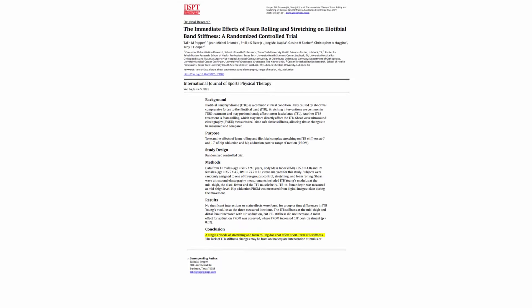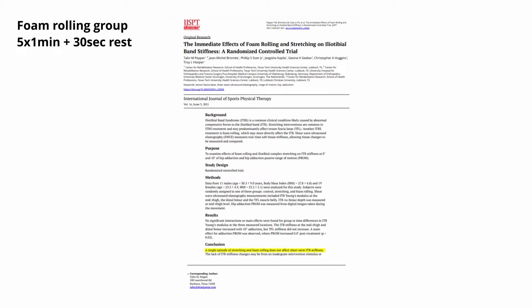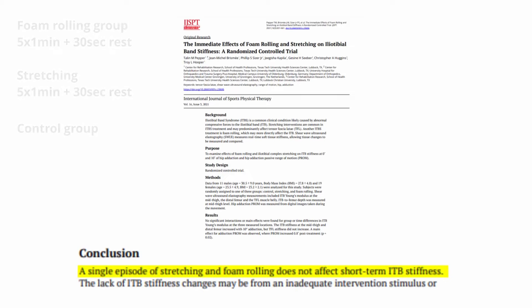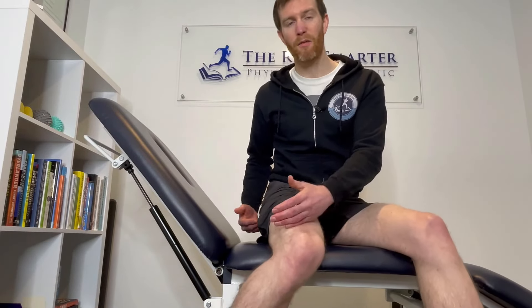One of the most common methods to release the ITB is foam rolling. A study by Pepper and colleagues took a foam rolling group, a stretching group, and a control group. The foam rolling and stretching groups did five sets of one minute each — five minutes total — while the control group did nothing. They measured ITB length using ultrasound and found that a single episode of stretching and foam rolling does not affect short-term ITB stiffness. This is primarily because the ITB is not muscle — it's a very thick fascial structure, so rigid and taut that it has no relaxing or contractile properties and cannot be manipulated to create more length.